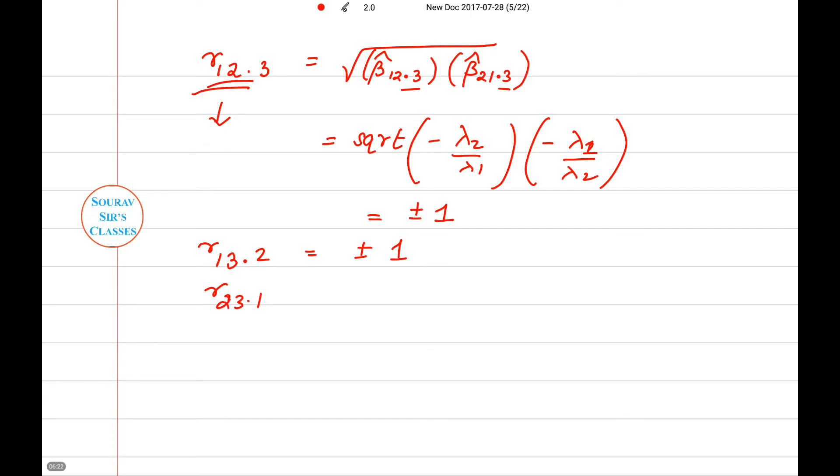Where r₂₃₁.₁ is the partial correlation coefficient between X₂ and X₃ holding X₁ constant.